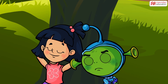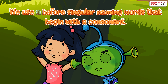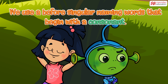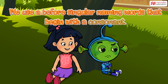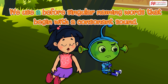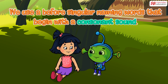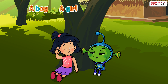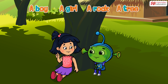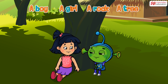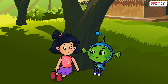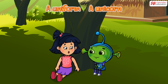No, it's a hour. Hour begins with a consonant, and we use A before singular naming words that begin with a consonant. You are almost right, Marty. We use A before singular naming words that begin with a consonant sound. We say a boy, a girl, a rock, a tree, because all these words begin with a consonant sound. Just as we say a uniform, a unicorn, because these words begin with the letter U, which have the consonant sound of Y.